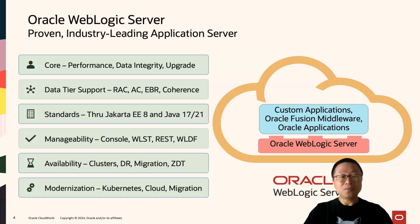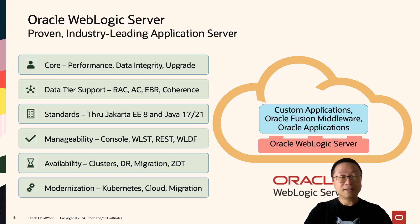As a foundation, WebLogic Server focuses on ultra-high performance, ensuring data integrity for your applications, and making sure that you have an upgrade path — making it easy to manage, monitor, observe, and patch. We have the best data tier support for the Oracle database, Coherence in-memory data grid, MySQL database, along with a host of third-party data tier products. The standards that WebLogic Server 14.1.2 adheres to are Jakarta EE 8, and also Java 17 and 21, the long-term supported versions of Java.